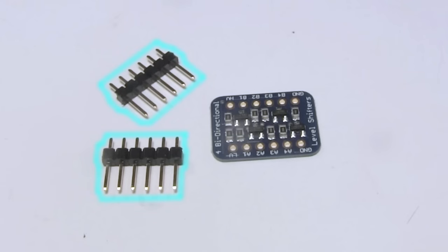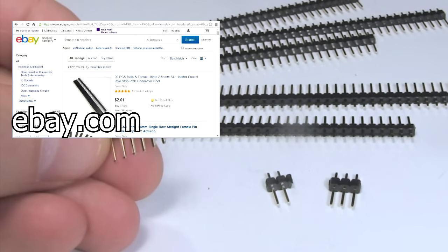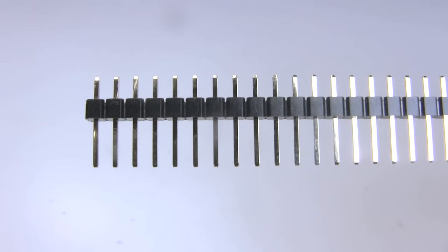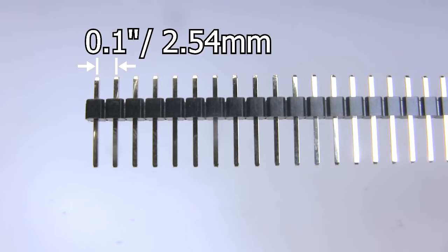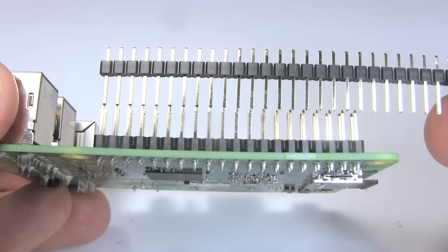These male pin headers came with it, but you can also make your own. There are many places you can order them online, such as eBay, Adafruit, and SparkFun, to give you some examples. Make sure you get headers with the right spacing. These pins are 0.1 inches, or 2.54 millimeters apart, which is also the spacing that the Raspberry Pi boards use.